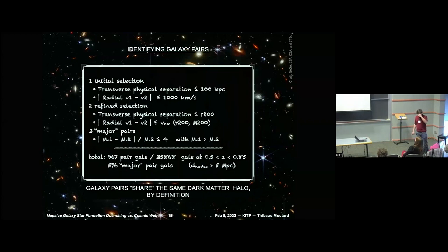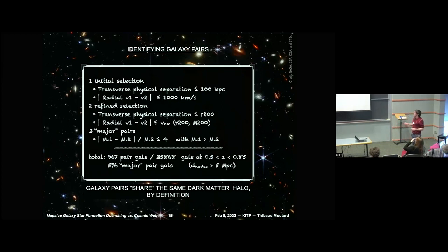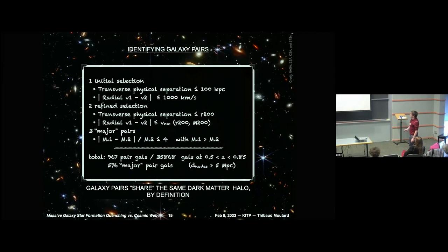For identifying pairs, I work with spectroscopic redshift measurements. I used a depth of plus or minus 10,000 kilometers per second for the difference in velocities between the two galaxies — about 0.05 in redshift — and an angular separation of 100 kiloparsecs on the sky. This is the first selection of candidate pairs, and then I use more physical quantities.